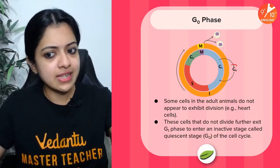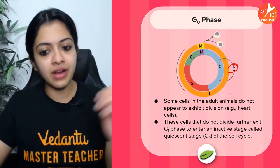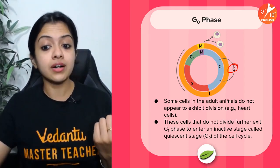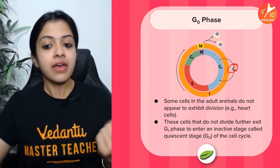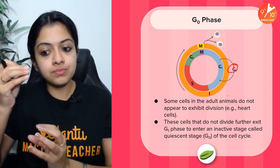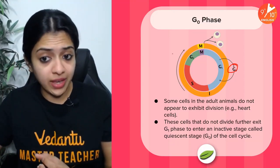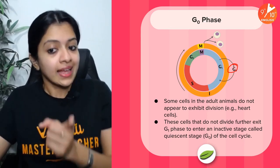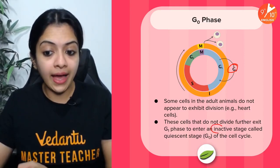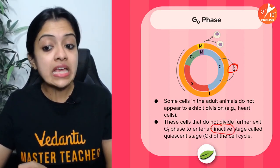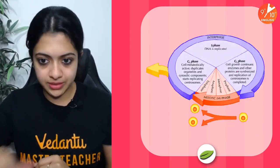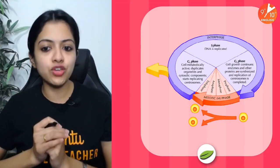G0 is an additional phase not seen in every cell — it's seen in cells like heart cells or nerve cells which don't divide once they are mature. What they do is exit the G1 phase after the M phase; once formed, they exit G1 and enter an inactive stage — that is the G0 phase, something like a resting stage. They don't divide any further.